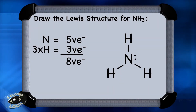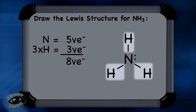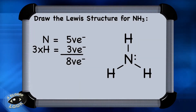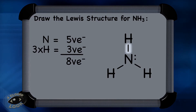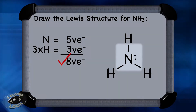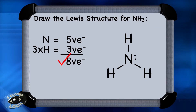Hydrogen claims 2 valence electrons and, remember, it is an exception to the octet rule, and it is stable. The nitrogen has 2, 4, 6, 8 electrons around it, so it is also stable. That's a complete Lewis structure for NH3.